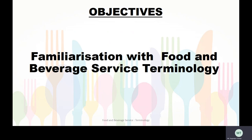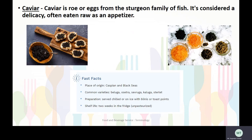The objectives of today's session are familiarization with Food and Beverage Service terminology. Our first term is caviar. Caviar is raw eggs from the sturgeon family of fish. It is considered a delicacy, often eaten raw as an appetizer.